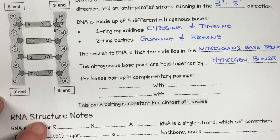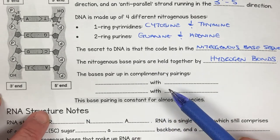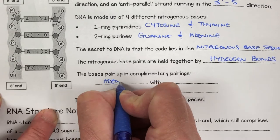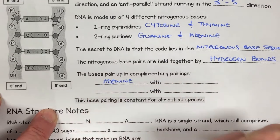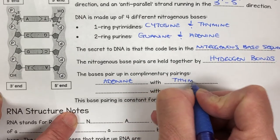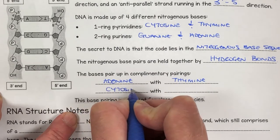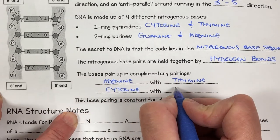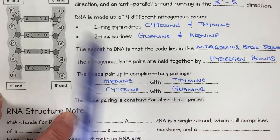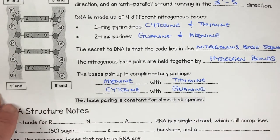My main man Chargaff came up with complementary base pairing. Basically, he said that if there is an X amount of adenine, there'll be exactly the same X amount of thymine. And if there is Y amount of cytosine, then there'll always be Y amount of guanine. This is called complementary base pairing: A always goes with T, C always goes with G.